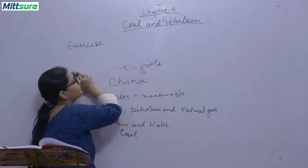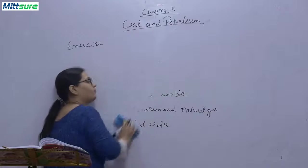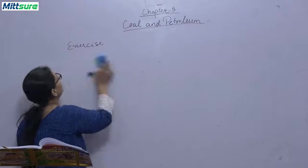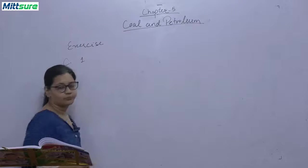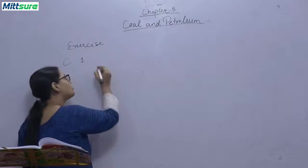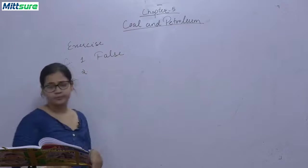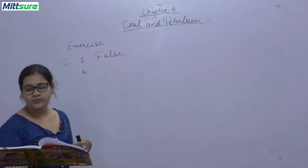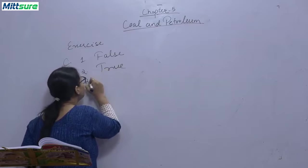Now HOTS true and false question. Now starts with C. First question, sunlight is not a non-renewable natural source. False, it is a renewable natural resource. Second, a coal mine and its accompanying structures are collectively known as colliery. It is true. Third, bituminous coal is the best quality of coal. It is false because the best quality of coal is anthracite.